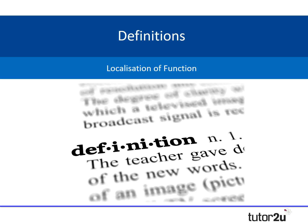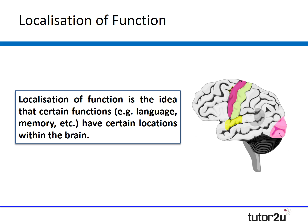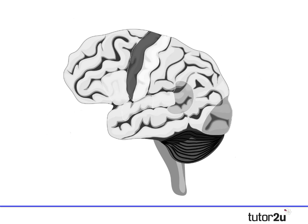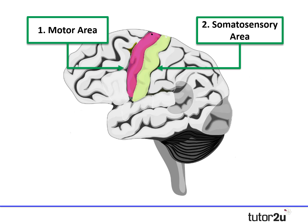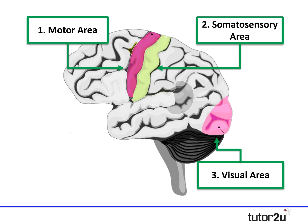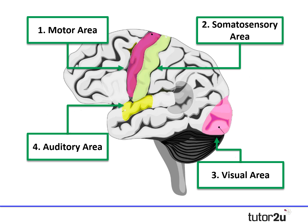Let's start with the key definitions, beginning with the most important umbrella term: localisation of function. This is the idea or theory that certain functions — for example memory and language — have certain locations within the brain. The four key areas you need to be aware of are the motor area, the somatosensory area, the visual area at the back of the brain, and the auditory area, which is actually close to where the ears are.